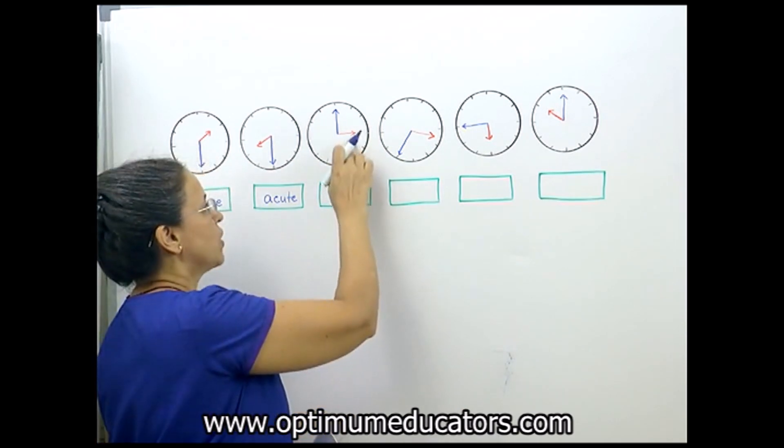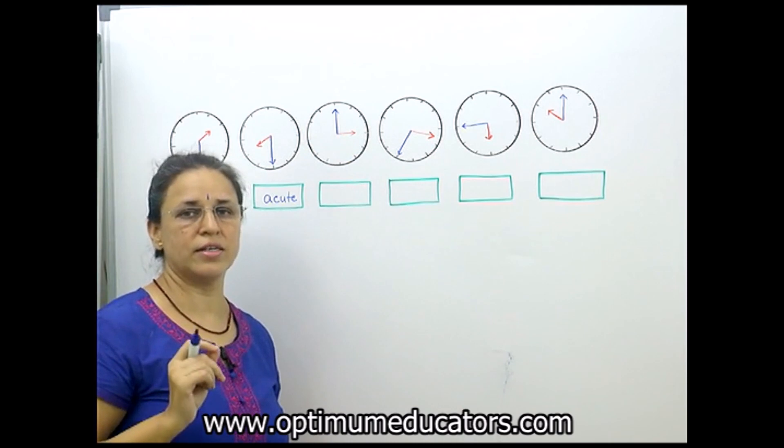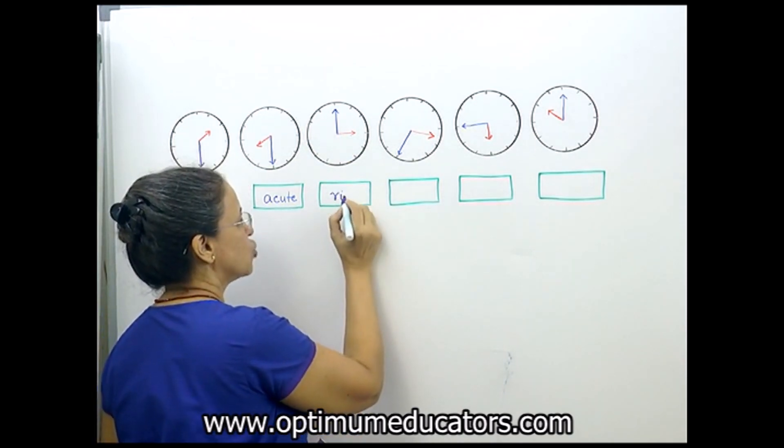Here the time is showing three o'clock. It is exactly 90 degrees, so this is a right angle.